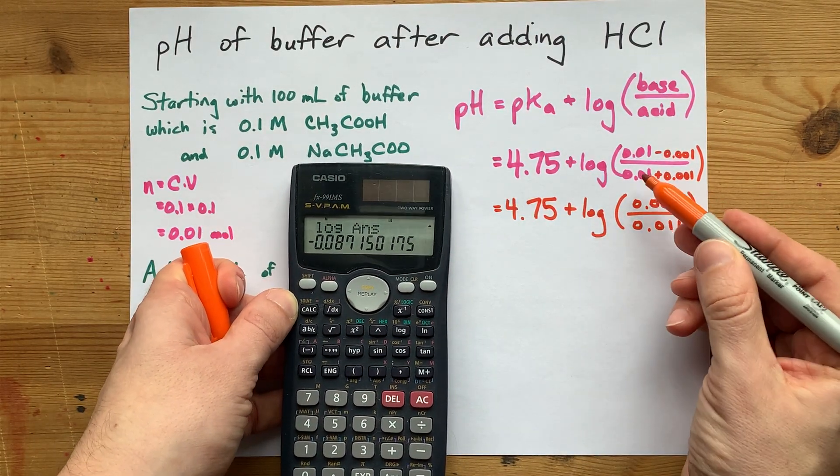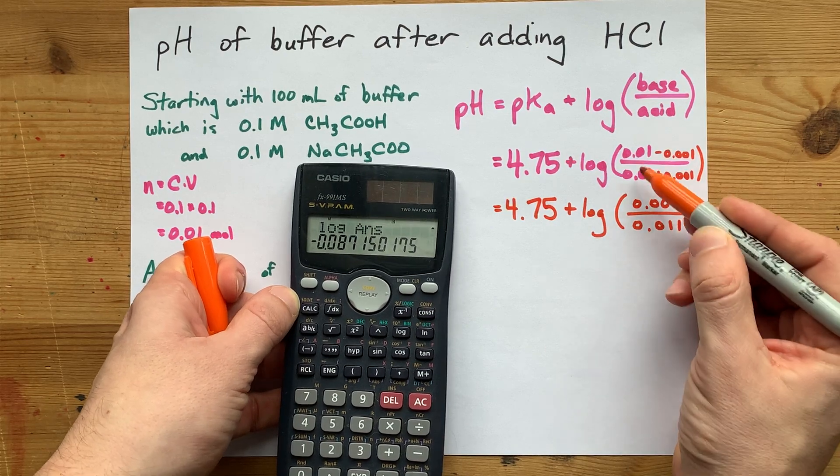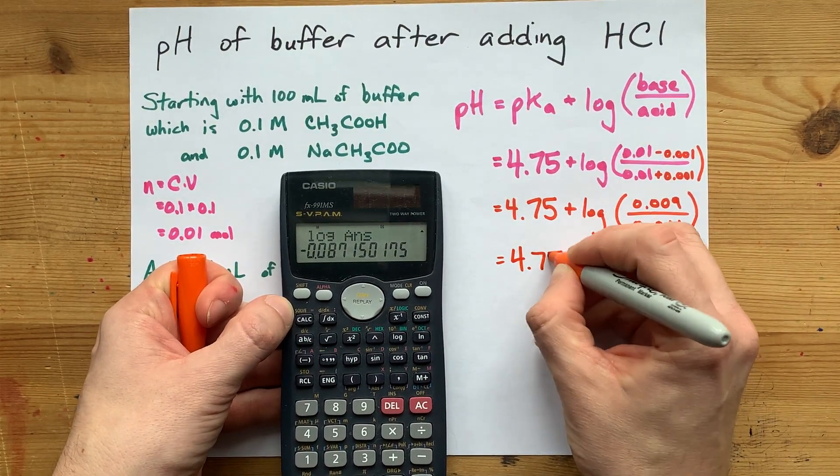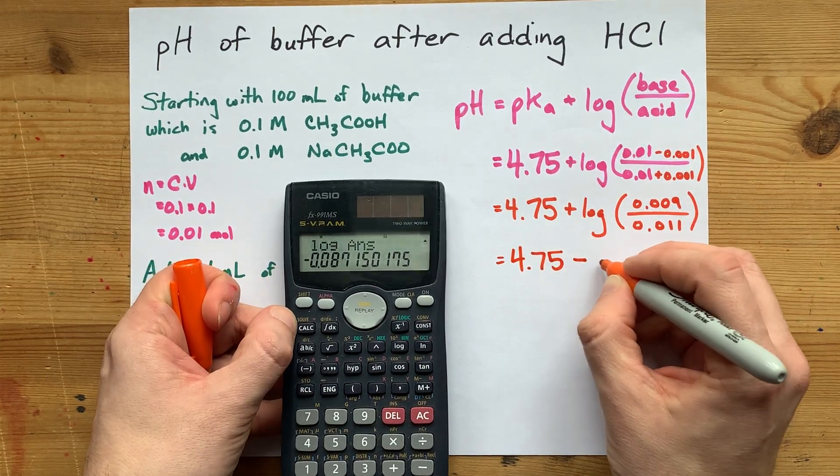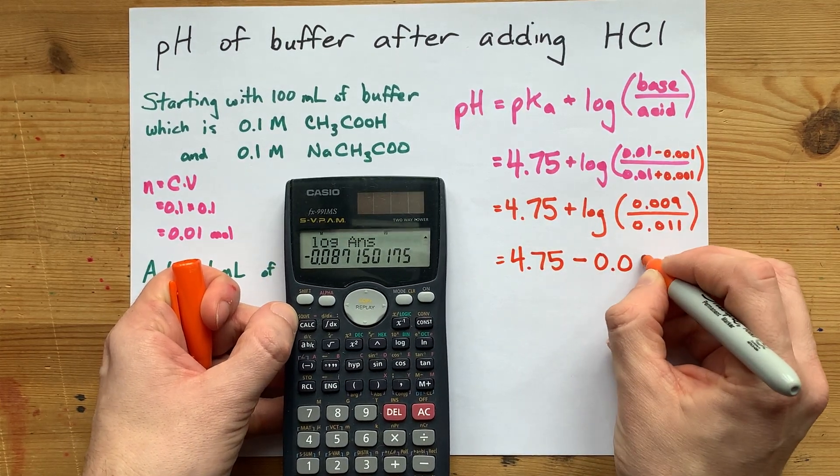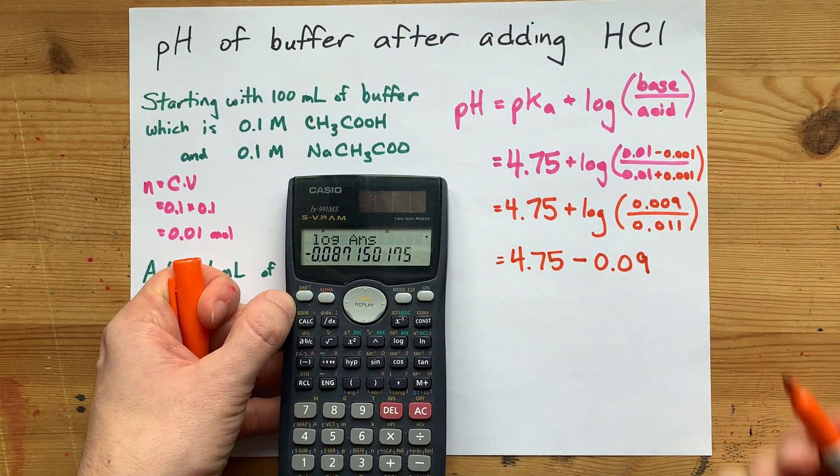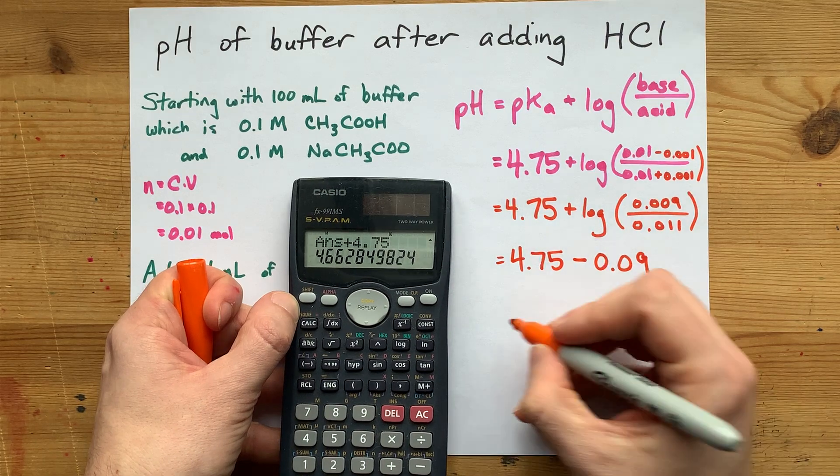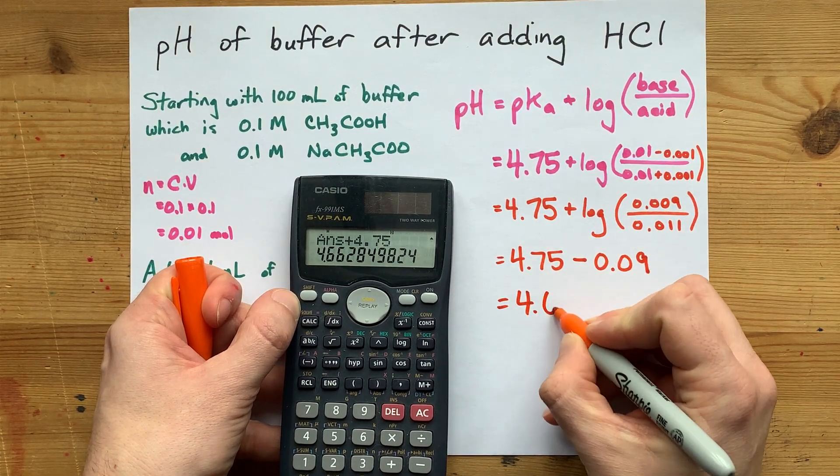Now that makes sense to me because I increased the denominator here and I decreased the numerator. So my pH is 4.75 minus 0.09. I'm just rounding that to two decimal places. And when I combine those two terms, I end up with 4.66.